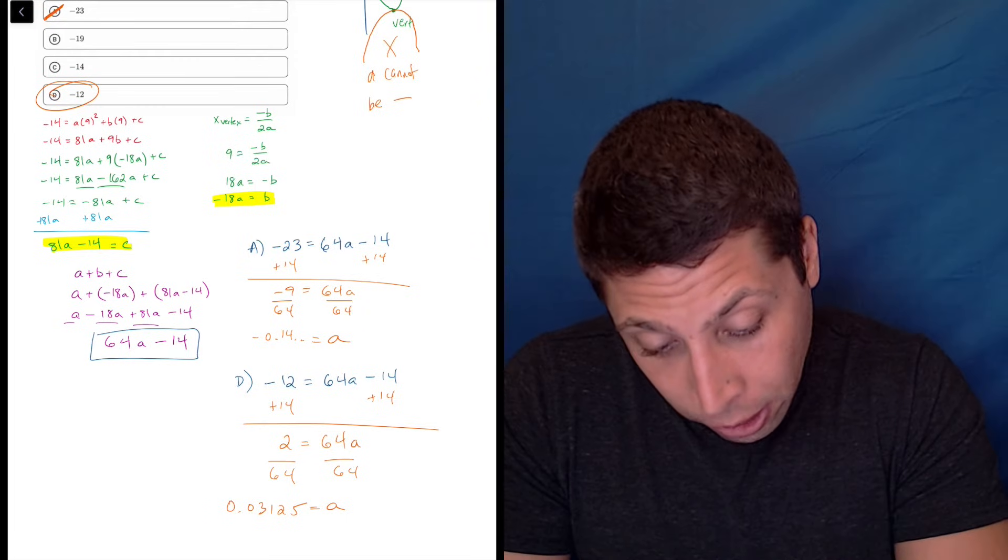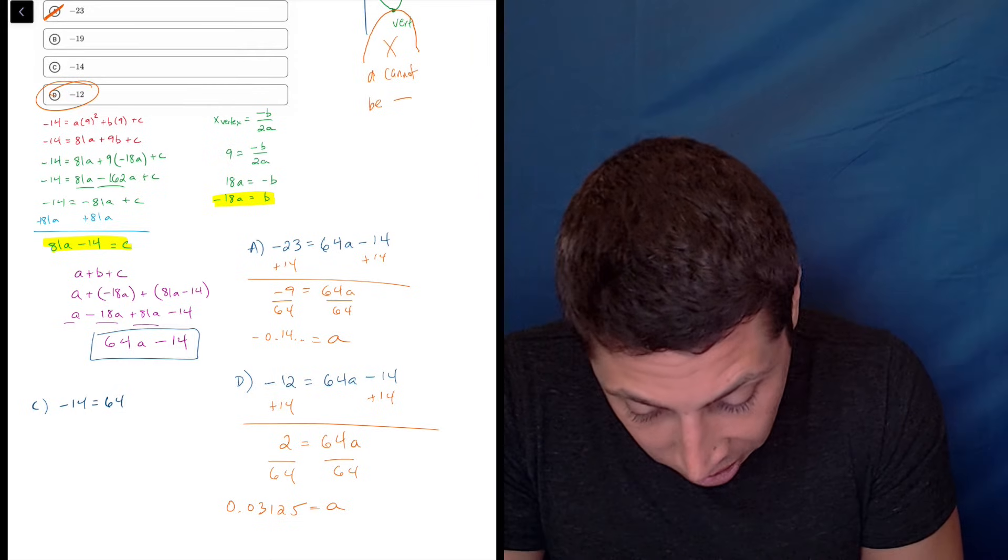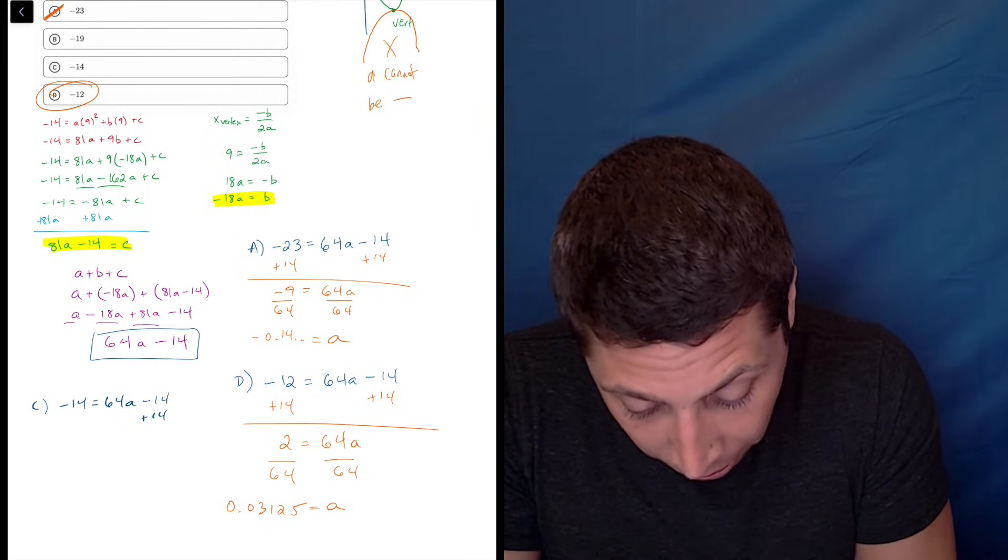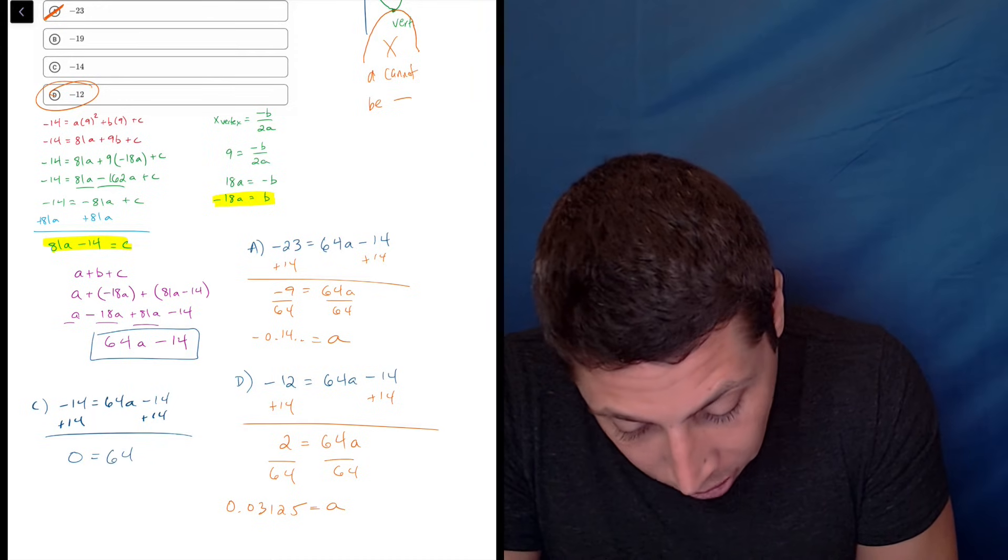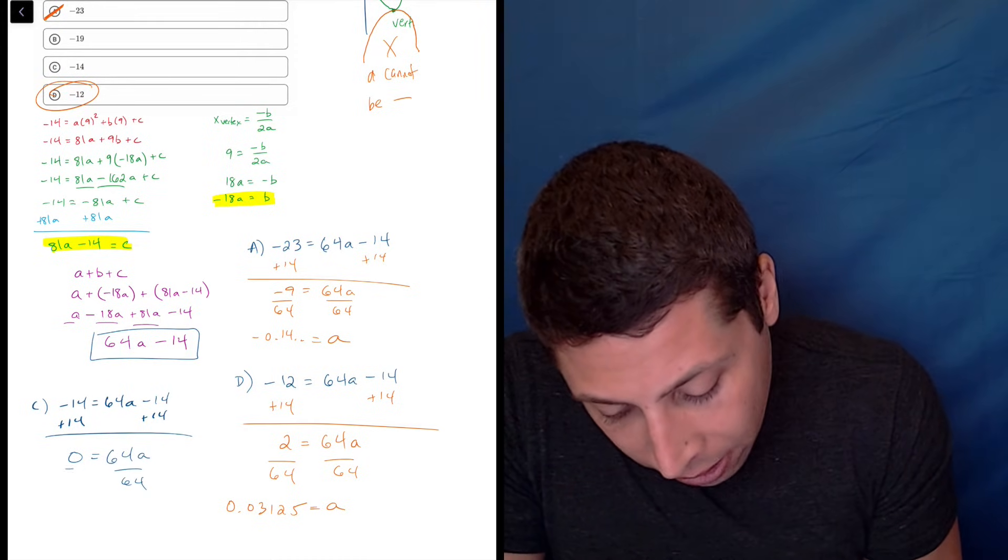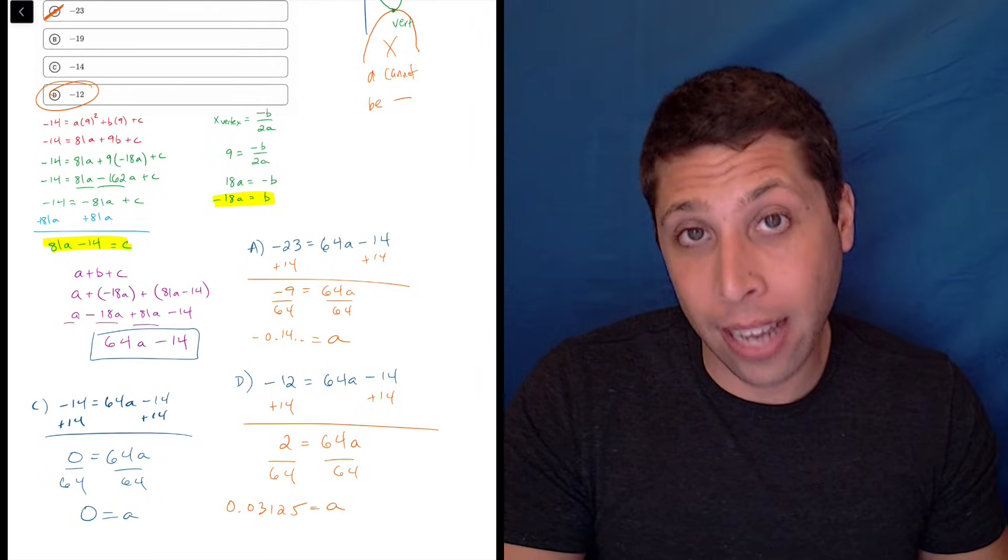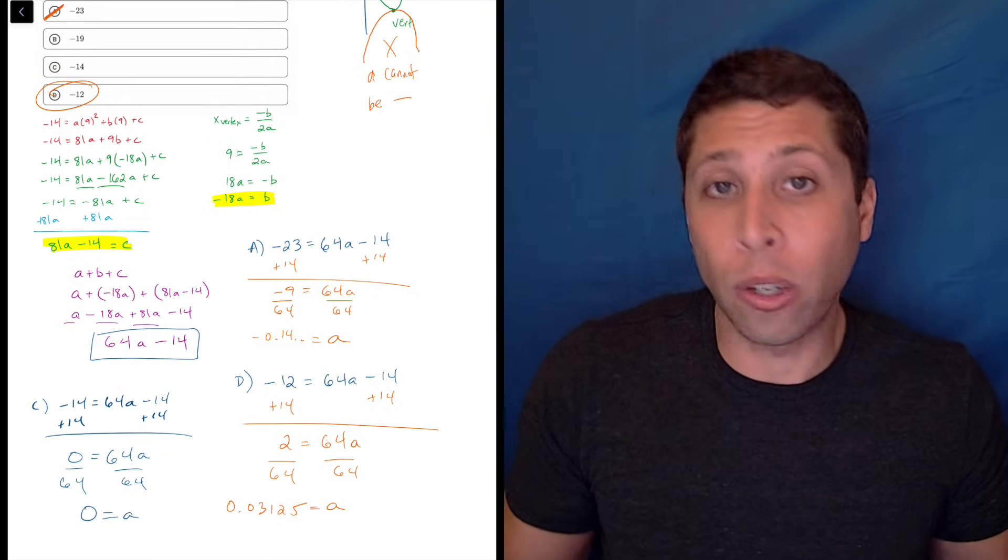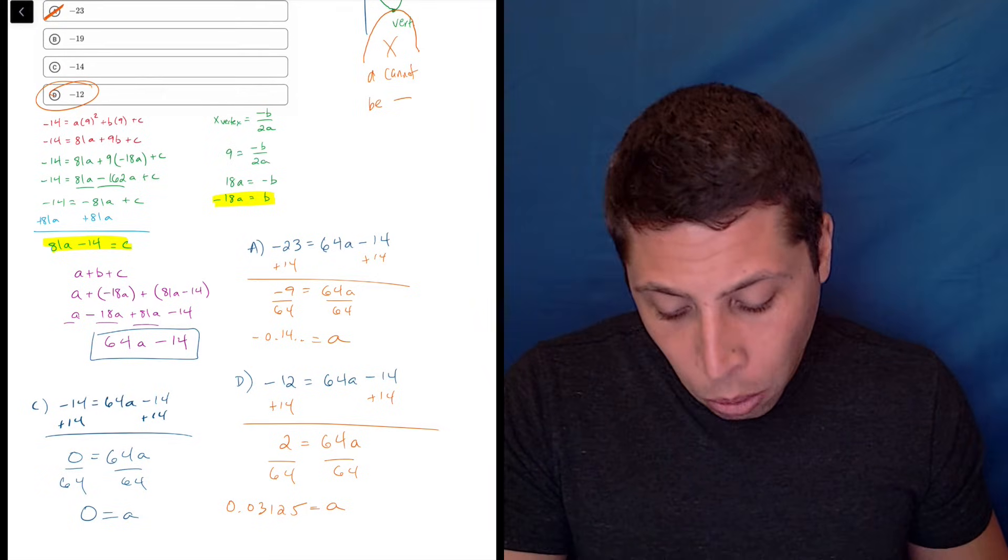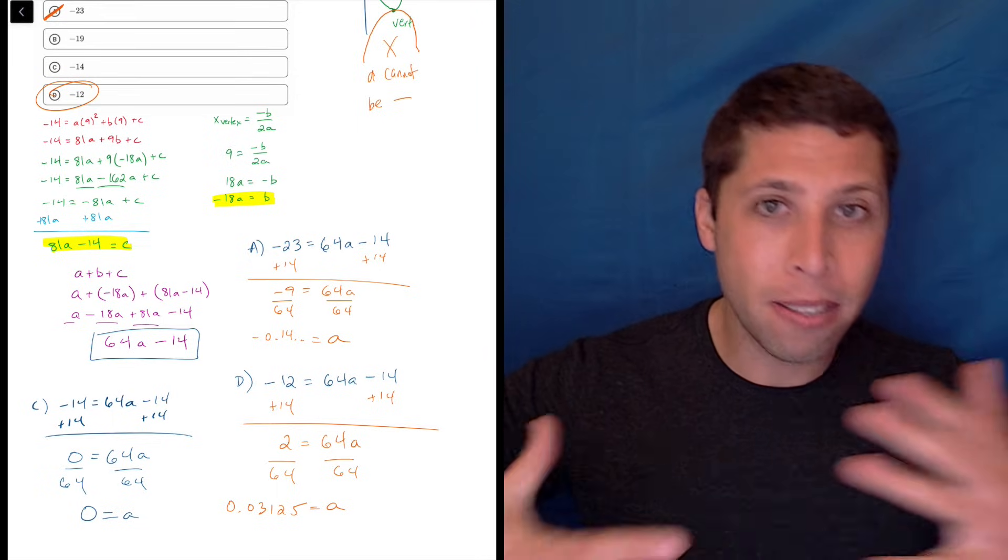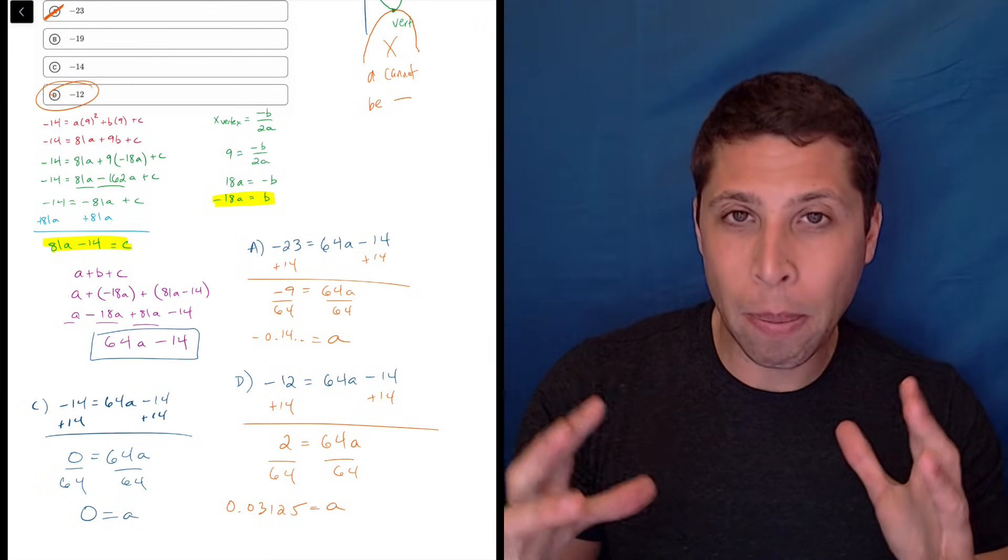If I tried C, which is close, negative 14 is equal to 64A minus 14. Notice what happens. If I add that 14, I get 0. So the 14 is the cutoff, right? Because if I divide by 64, A is 0, which doesn't make any sense. You can't have, and it's not a quadratic anymore. Because then it would be 0x squared and that x squared would go away and we just have a line.